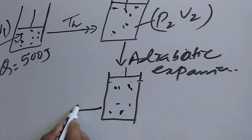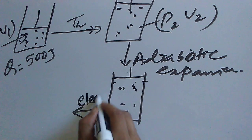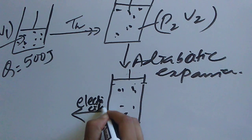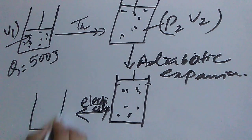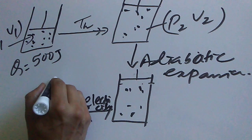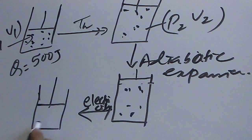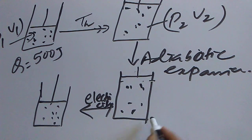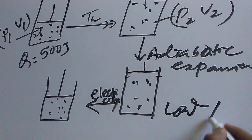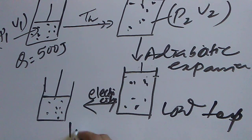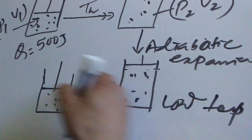After that, we start compression. From outside we supply electricity to compress the gas. The temperature of the gas is now low — this is the low temperature state. We supply electricity to compress the gas from this state to the next state.